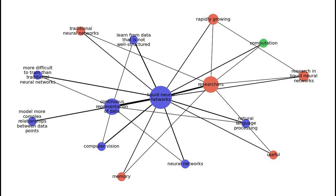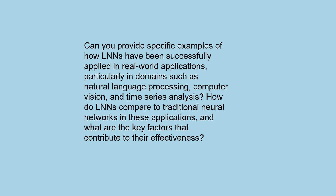Despite these challenges, research in liquid neural networks is rapidly growing. Researchers are working on developing new methods for training liquid neural networks and on making them more efficient. As these methods continue to develop, liquid neural networks are likely to become increasingly useful for a wide range of tasks. Can you provide specific examples of how LNNs have been successfully applied in real-world applications, particularly in domains such as natural language processing, computer vision, and time series analysis?